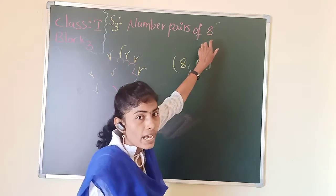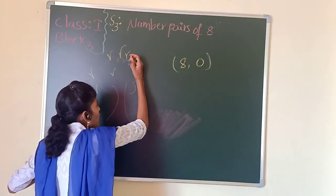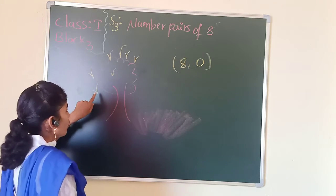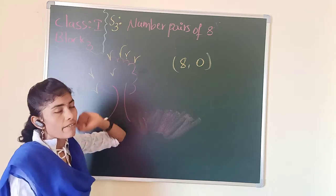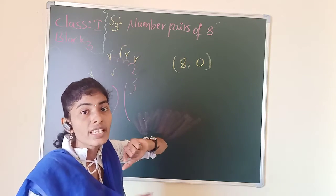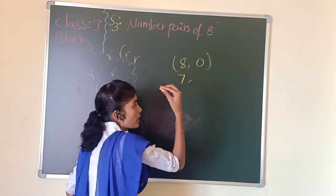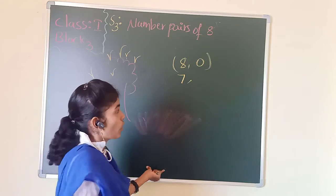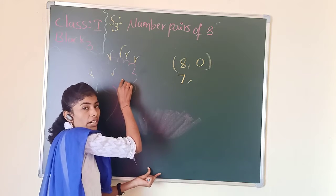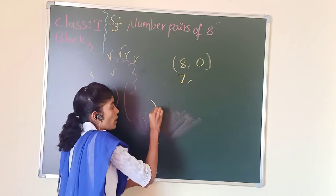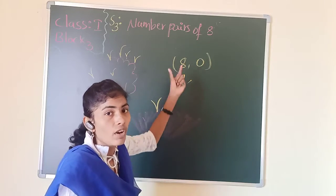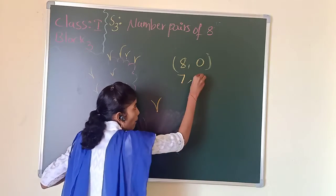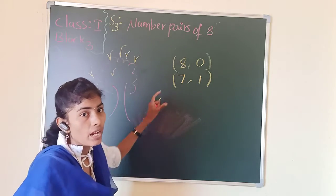Now if I have 7 monkeys on the tree — let's count: 1, 2, 3, 4, 5, 6, 7. How many monkeys are on the tree? 7 monkeys. So how many monkeys will be on the grass? 7 are playing on the tree, so 1 more will be on the grass. 7 plus 1 equals 8. So 7 comma 1 is another different number pair for 8.